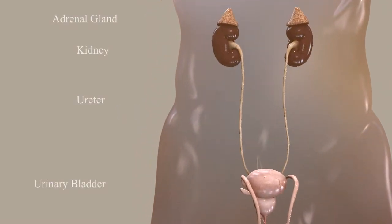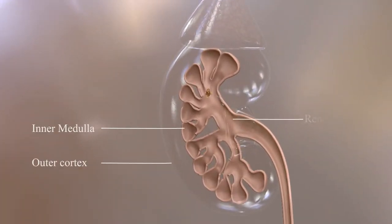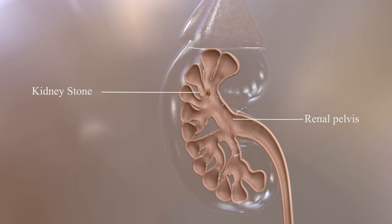Parts of the urinary system include the adrenal gland, kidney, ureter, and urinary bladder. Inner parts of the urinary system include the inner medulla, outer cortex, and renal pelvis.